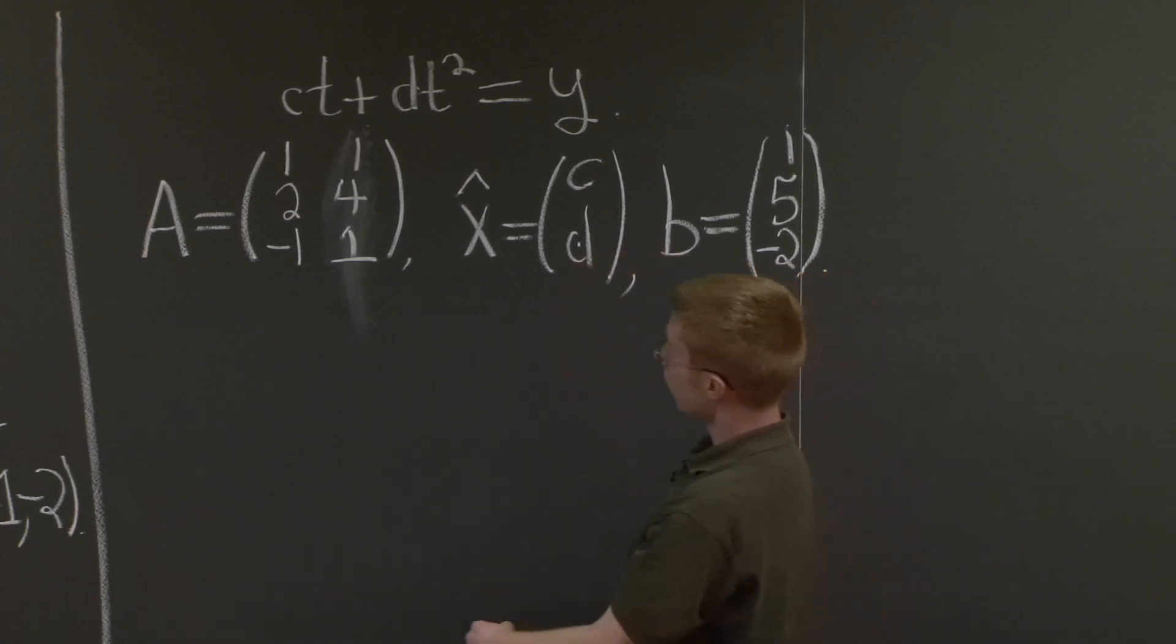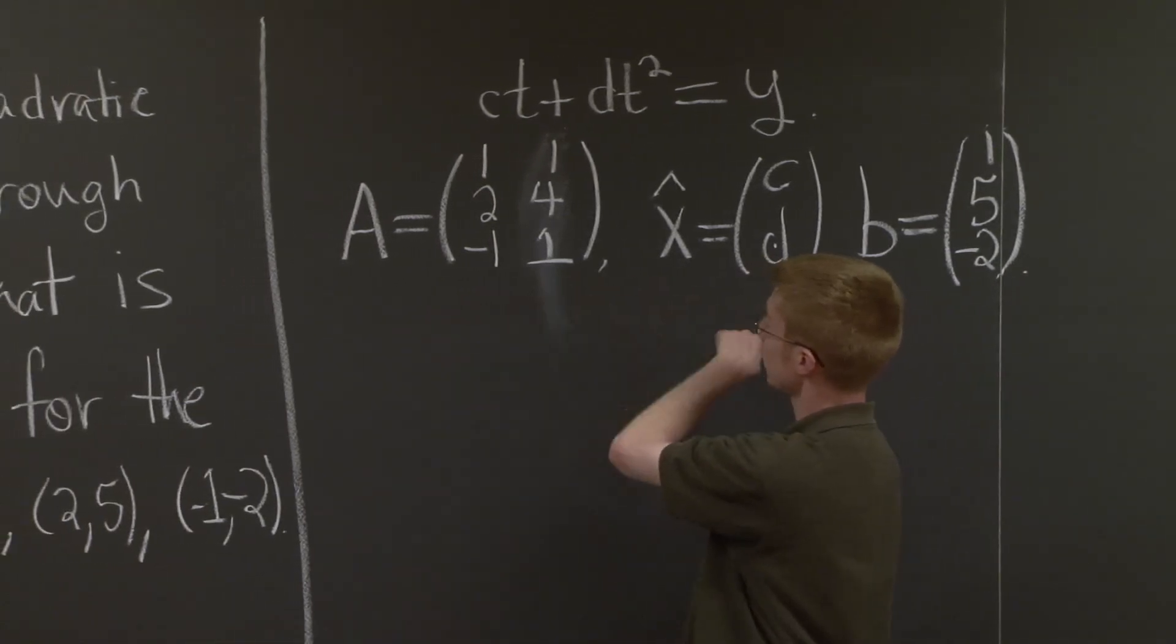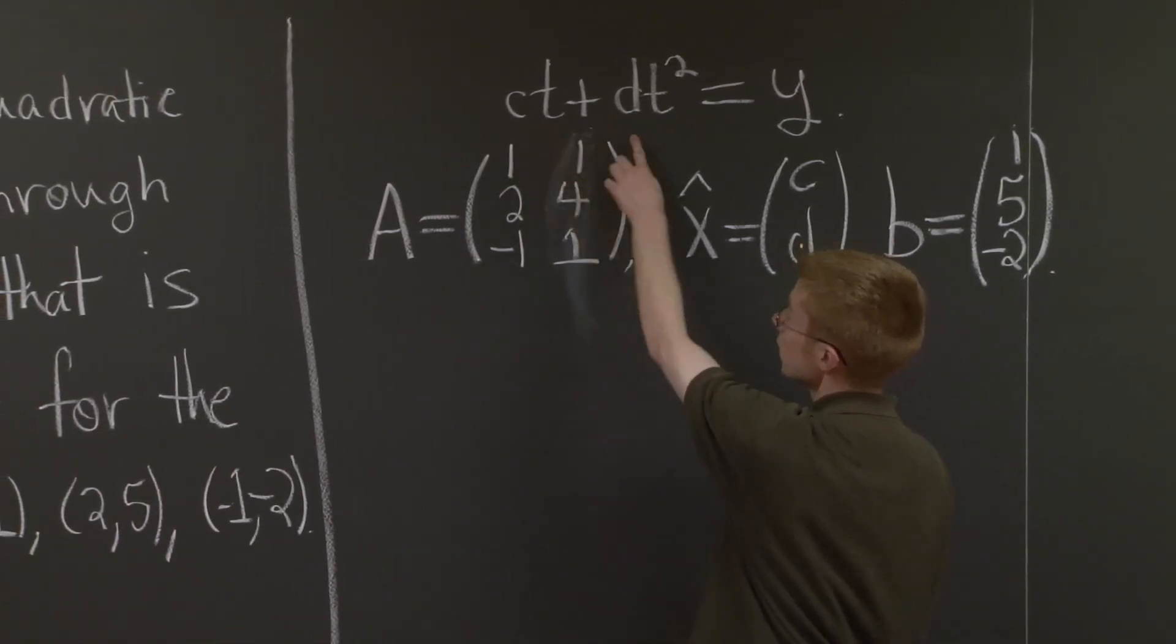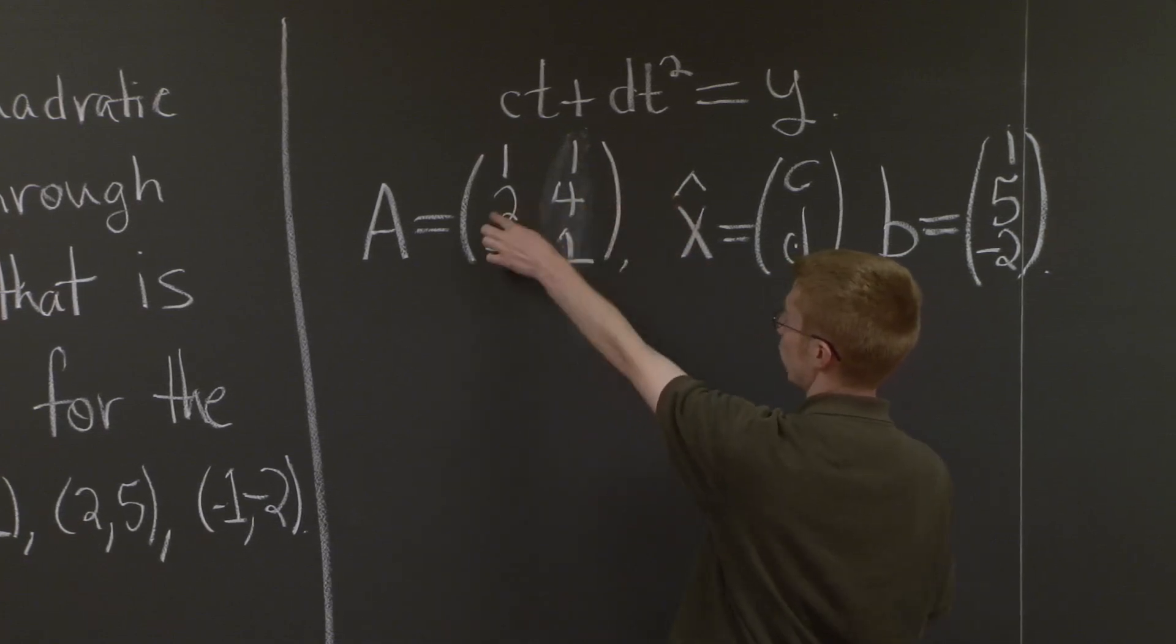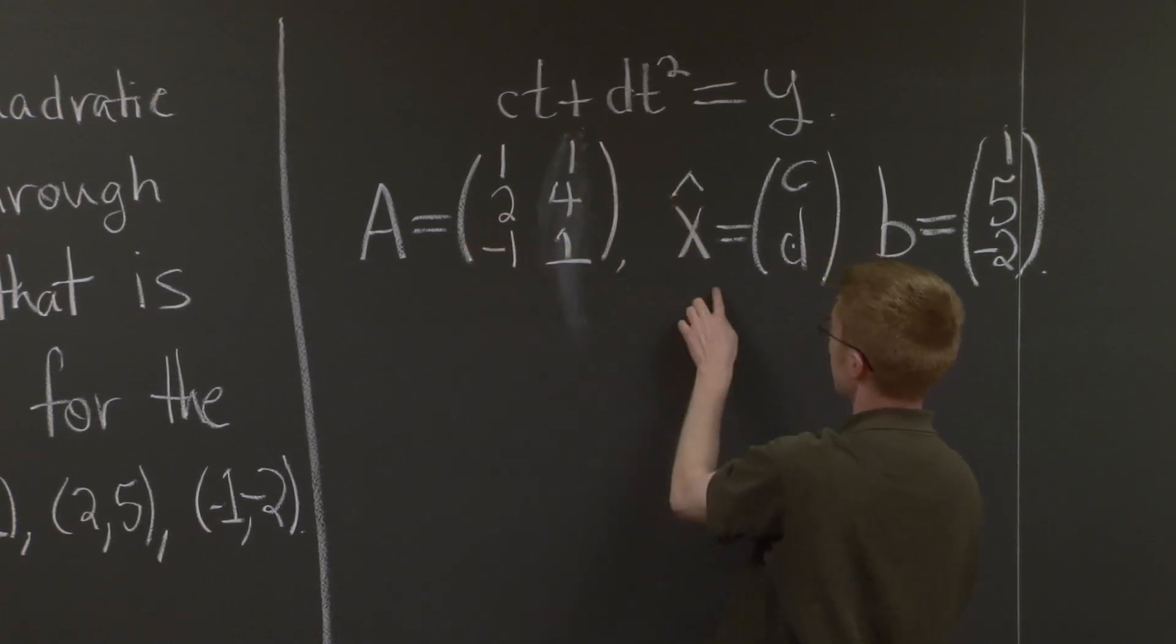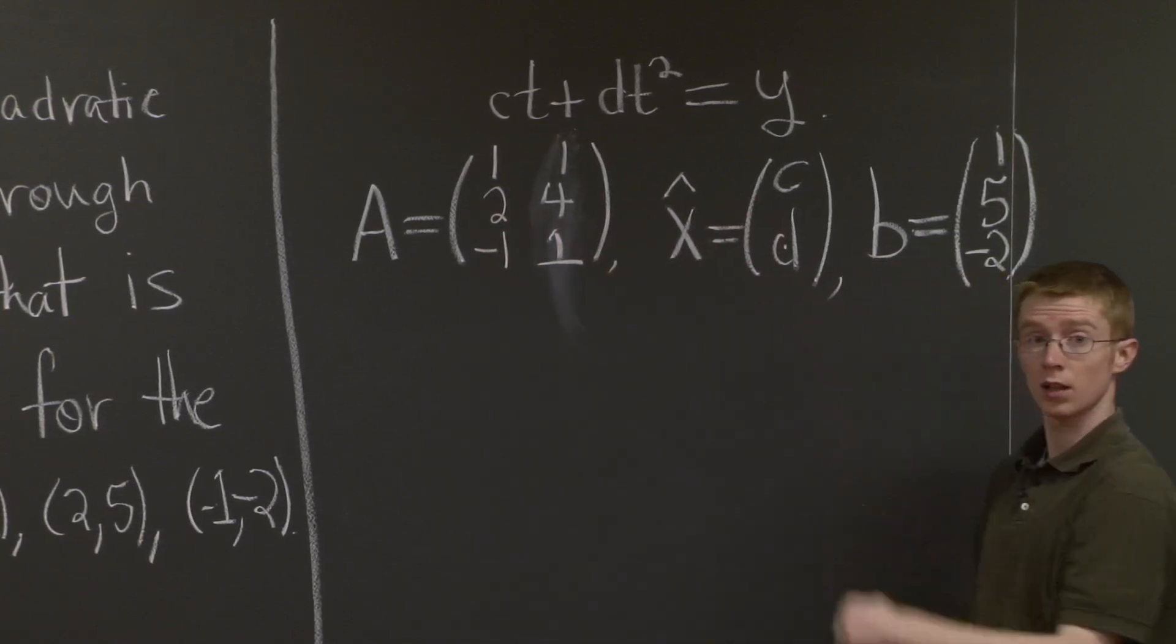And similarly, if I took the second point and plugged it in here, I would just get 2 times c plus 4 times d, which is just the same as the second coordinate in the multiplication A times x hat. 2 times c plus 4 times d.